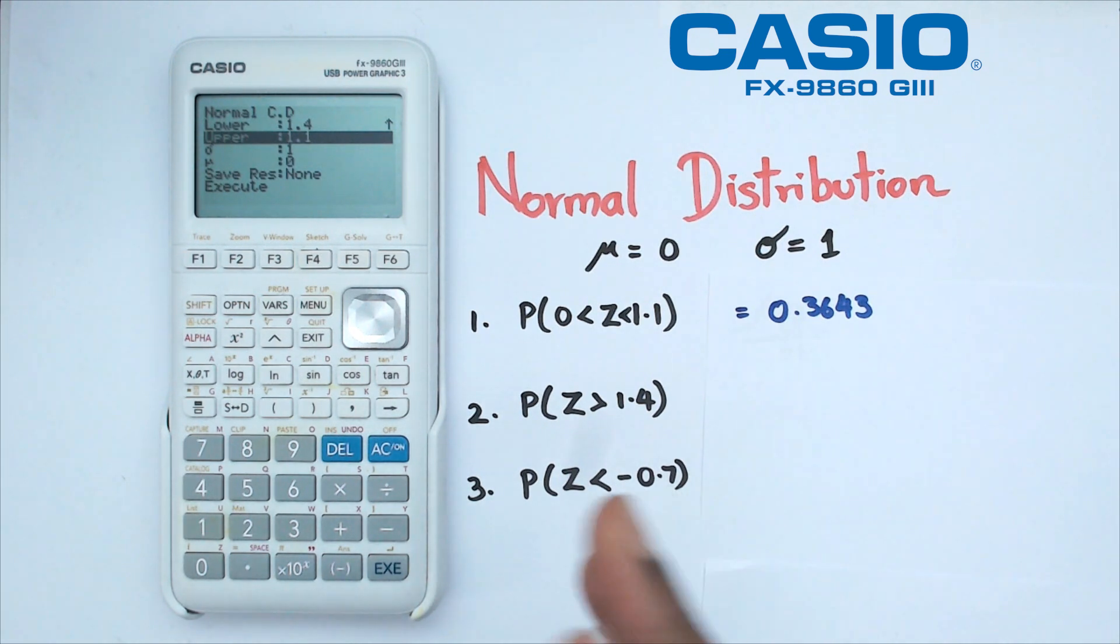in Z scores your upper limit and lower limit is positive 5 and negative 5 because you should be able to cover all of your data. Now just in case if you're not sure about it, what you can do is 1 times 10 to the power of 10.